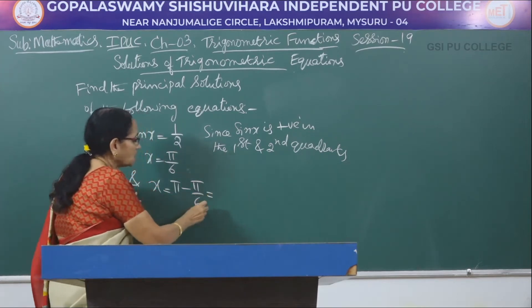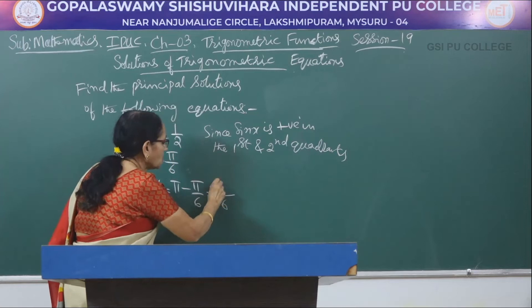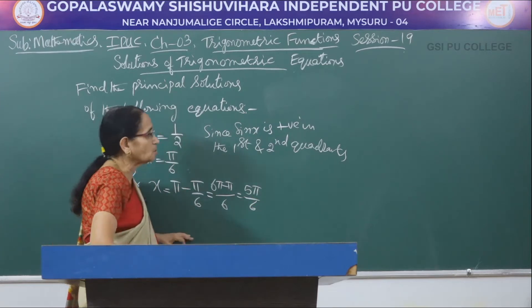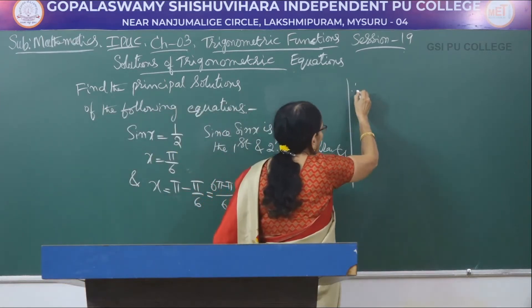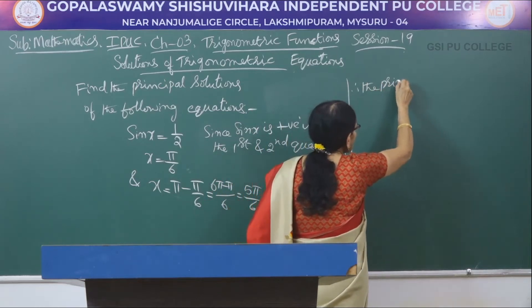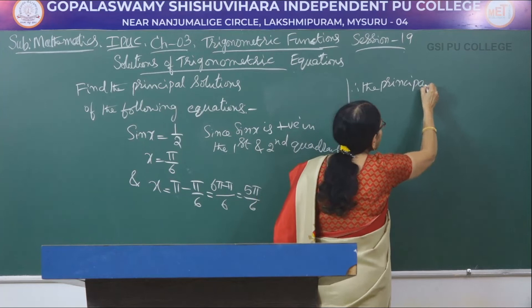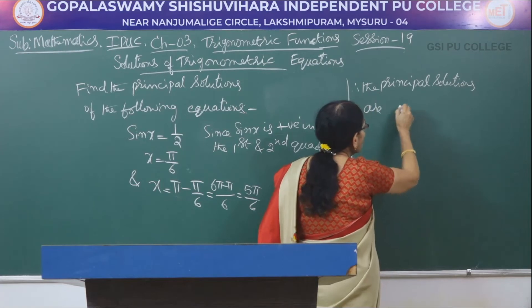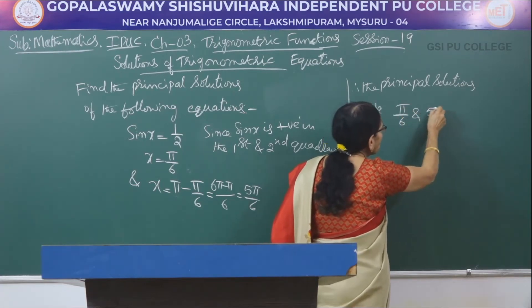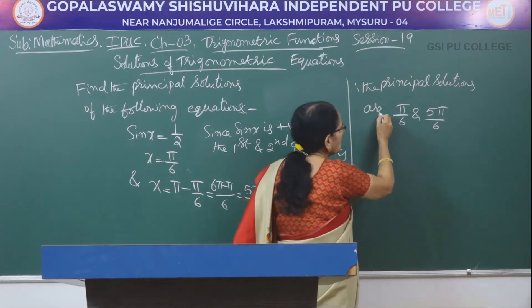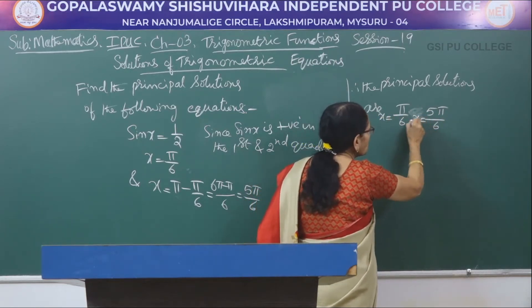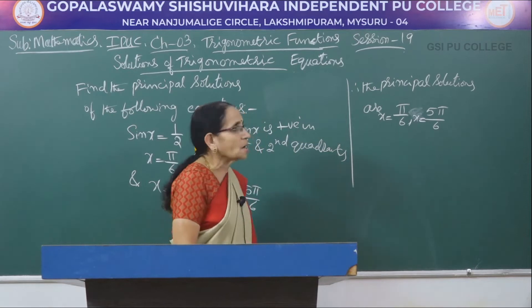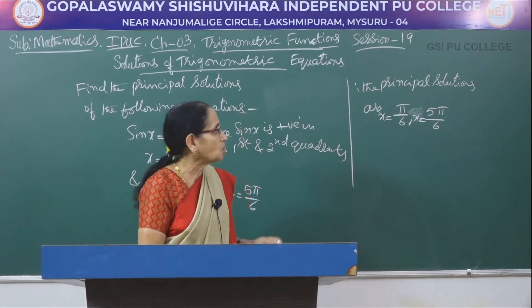Simplify pi − pi/6: taking LCM of 6, we get (6pi − pi)/6 = 5pi/6. Therefore the principal solutions are x = pi/6 and x = 5pi/6.